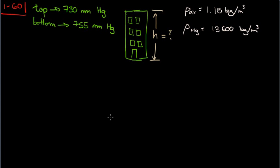Alright, so this is problem 160 from your thermodynamics book. This problem is asking what is the height of a building where two barometer measurements were made at the top and bottom of the building. At the top they gave us 730 millimeters of mercury and the bottom 755 millimeters. And they gave us the densities as well, right here - densities of air and mercury.